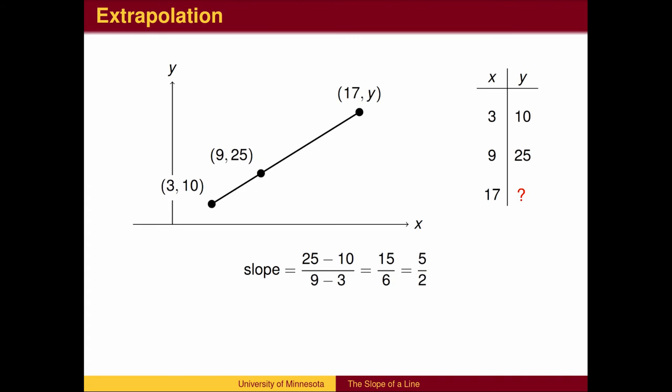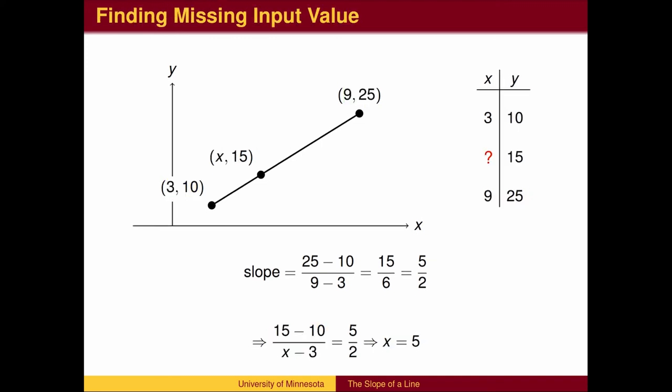A second type of problem is extrapolation, also called prediction. We find the y value of a future point using the same method as we did for interpolation. First, finding the slope using the two known points. Then, using the slope plus one of the known points with a new point and solving for y. We can also find a missing x value using the same technique.